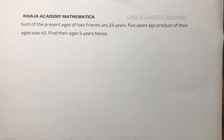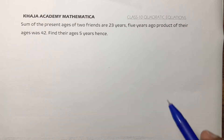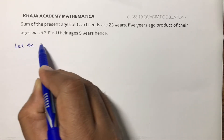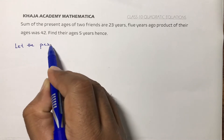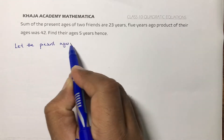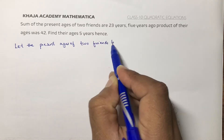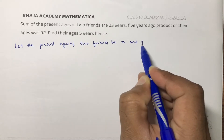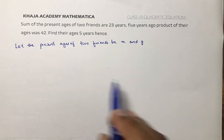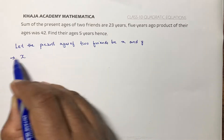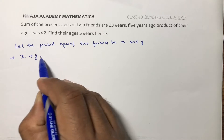The sum of the present ages of two friends is 23 years. Five years ago, the product of their ages was 42. Find their ages 5 years hence. Let the present ages of two friends be x and y. According to the question, the sum of their present ages is 23, so x plus y equals 23.